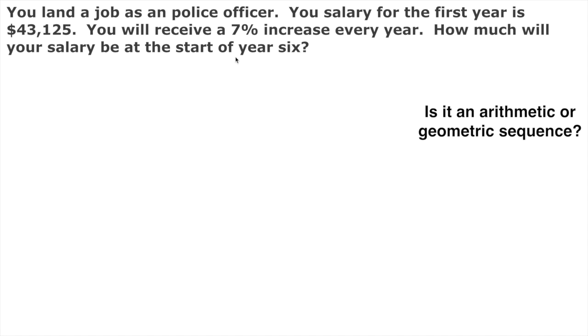A geometric sequence means we're multiplying by the same amount every year. In this case we're multiplying it by 7% higher, so that is a multiplication factor. This one is a geometric sequence.